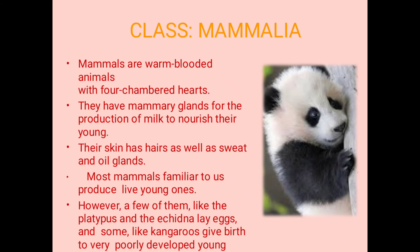The next class is Mammalia. Animals in which mammary glands are present and which have hairs on their body come under class Mammalia. These animals are warm-blooded and have a four-chambered heart. Mammary glands are used to produce milk, which is good for the nutrition of the young ones. Their skin also has sweat glands and oil glands present.